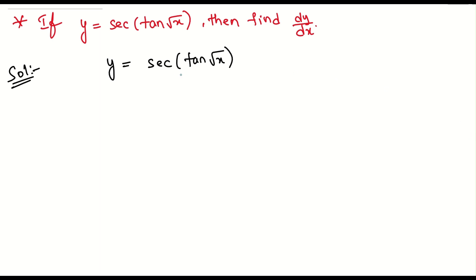So what I will suggest you is whenever you are applying the chain rule, come from the outside. What is outside? Outside secant is there, inside tan is there, and then inside root x is there. So what we will do is simply consider this as a capital x.